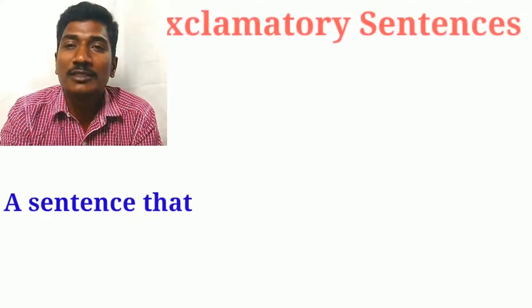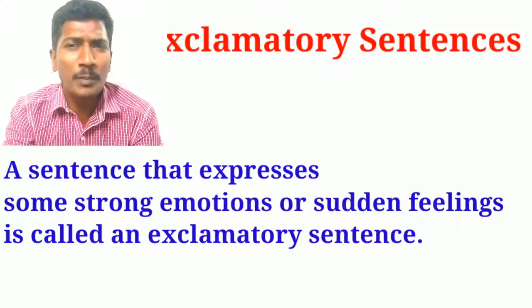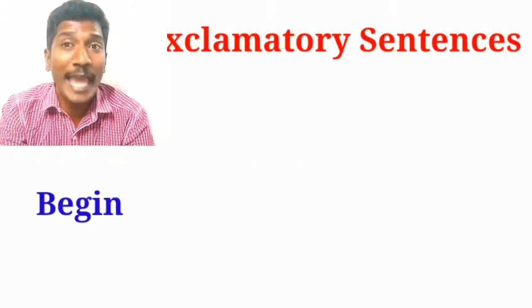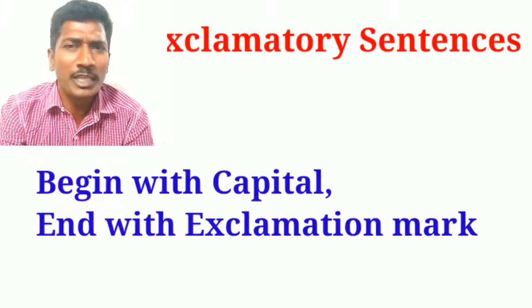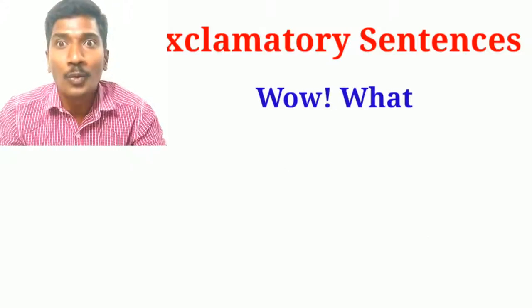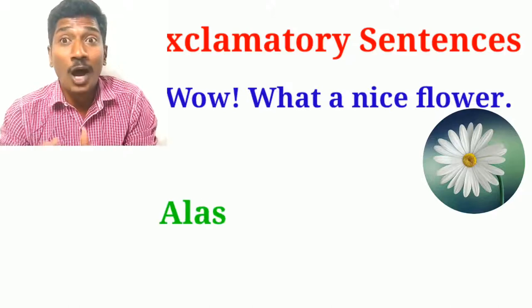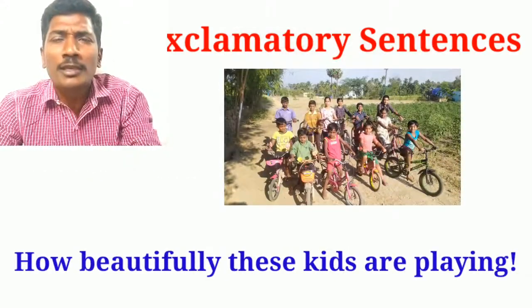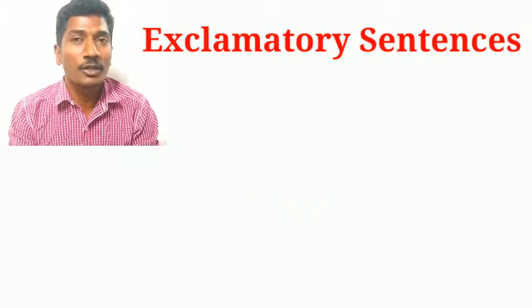Let's move on to the last kind — exclamatory sentences. A sentence that expresses strong feelings or emotions — maybe sorrow, maybe happiness, strong feelings — they are called exclamatory sentences. They always begin with a capital letter and end with an exclamation mark, or sometimes a full stop. For example: Wow! What a nice flower! After 'wow,' the exclamation mark comes. How beautiful she is! How beautifully these kids are playing! How cold it is! They all end with exclamation marks and are called exclamatory sentences.